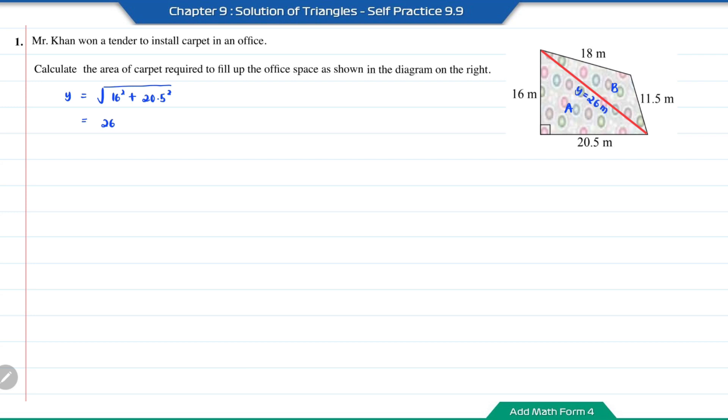To find the area of triangle A, we use the formula 1/2 times base times height. It equals 1/2 times 20.5 times 16, which equals 164 square meters.